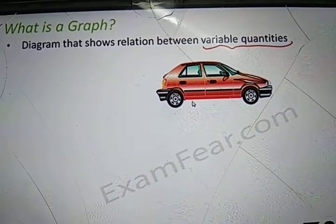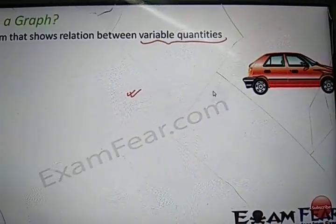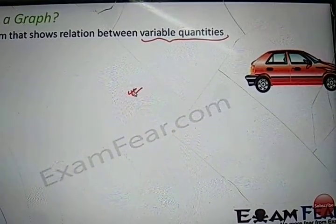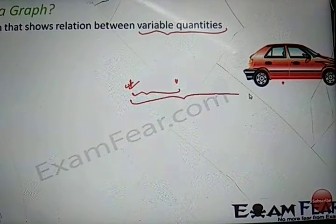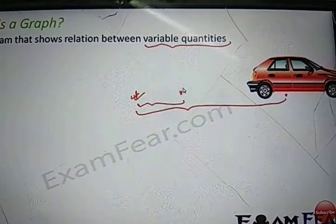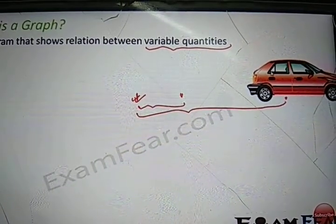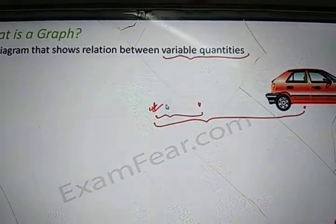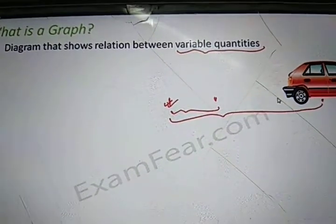Let us take another example of a car. When this car moves, its position changes. Therefore, the distance covered also changes. When the car was here, it had covered no distance. When the car is here, it covered this much distance. As the car is moving, the distance moved also changes and the time also changes. Maybe when it was here, it took 5 seconds, but by the time it reached here, it took 30 seconds. So basically at every point, the distance and the time also change. Let us try to plot this motion of a car in a graph.